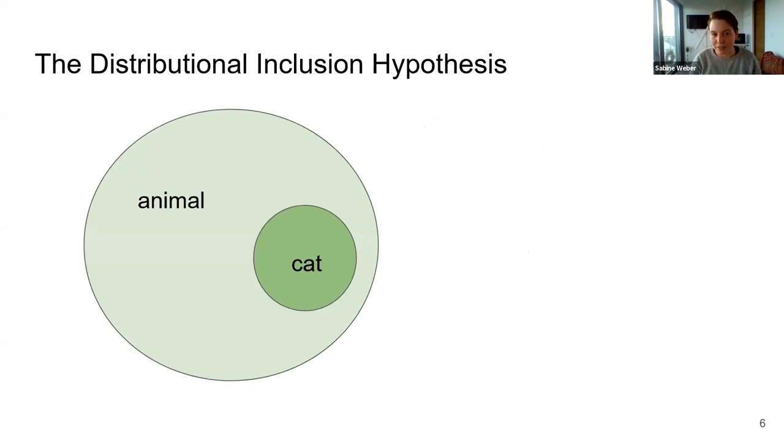Geffet and Dagan go ahead saying that more general words like animal occur in a wider range of different contexts, whereas more precise words or more specific words like cat appear in a smaller range of contexts. And when all of the contexts of the word animal include all of the contexts of the word cat, we can conclude that the word cat entails the word animal.